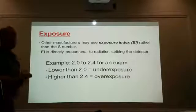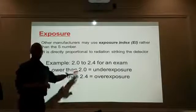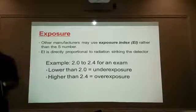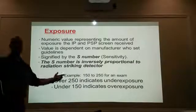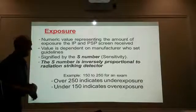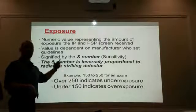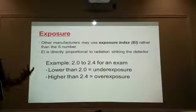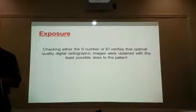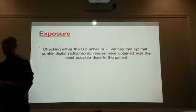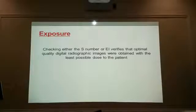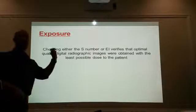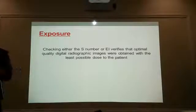In the facilities, once you start doing your clinical internship, it's going to be one or the other — it all depends on who installed the unit. European-type X-ray units use the S number, so everything's backwards. Japanese or American equipment typically uses the EI. But they both do the same thing. Checking either the sensitivity number or the exposure index verifies that optimal quality digital radiograph images were obtained with the least possible dose to the patient — because that is our objective: to get good images while providing minimal radiation to our patients.